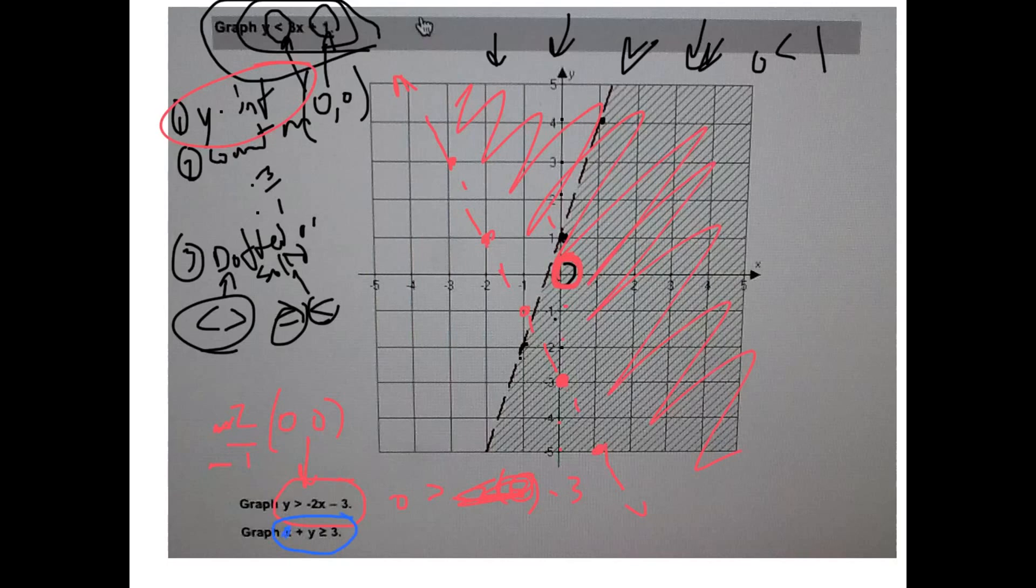Okay, so easy way to do this, it's in standard form so we could just say cover up the x, y is three, and then cover up the y which is an x here, x is three as well. Now dotted or dashed line? Don't get crazy. It's a solid line because it's greater than or equal to. That means it can be on this line, therefore it is a solid line.